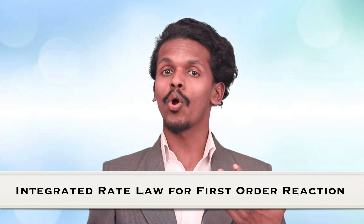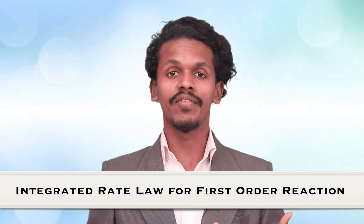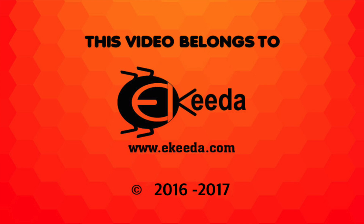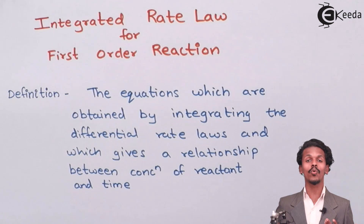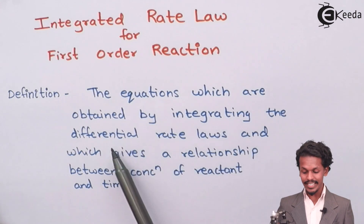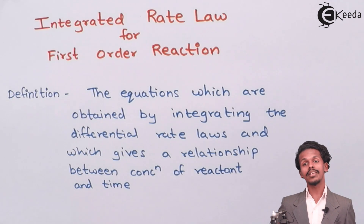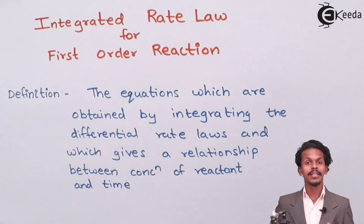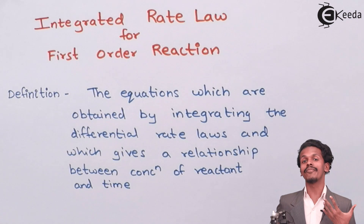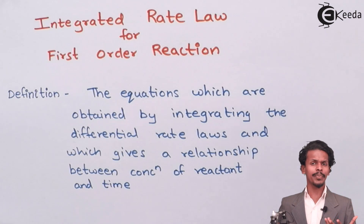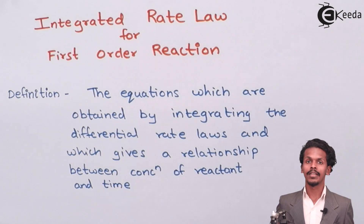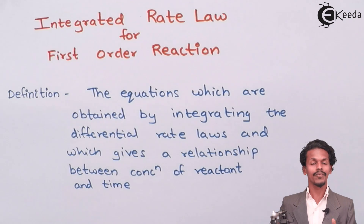So friends, initially we have learned what is order of reaction, and based on that we have learned what is rate law. Now what we are going to do is a derivation which is based on the integrated rate law for the first order reaction. The integrated rate law is nothing but the equations obtained by integrating the differential rate law, which gives a relation between concentration of reactant and time.